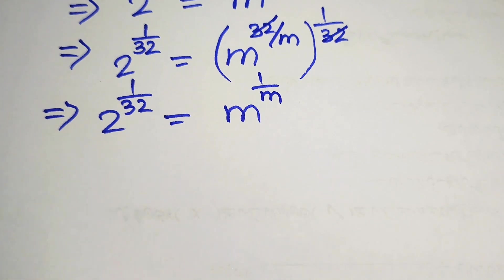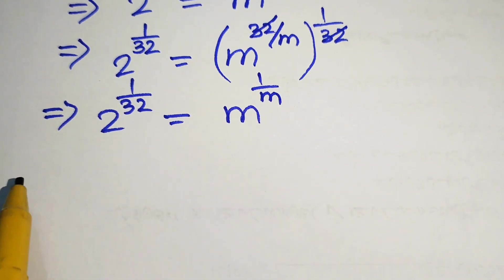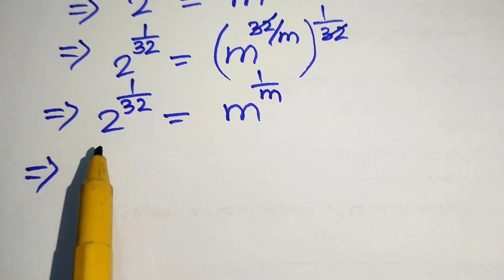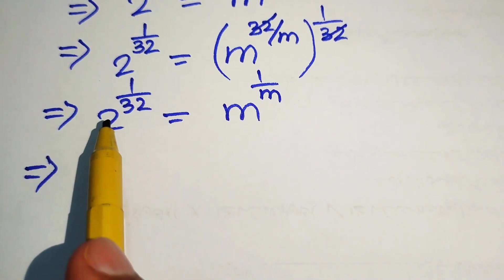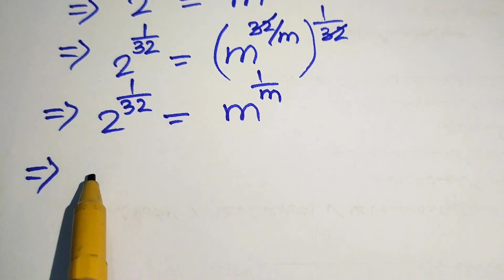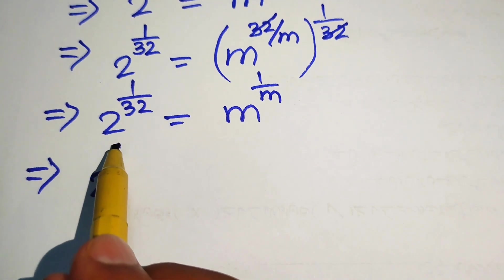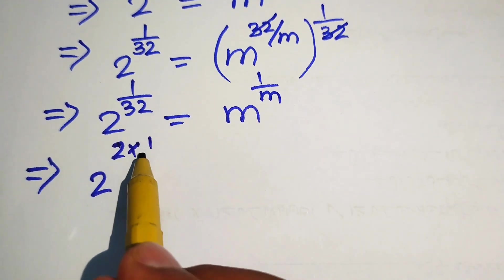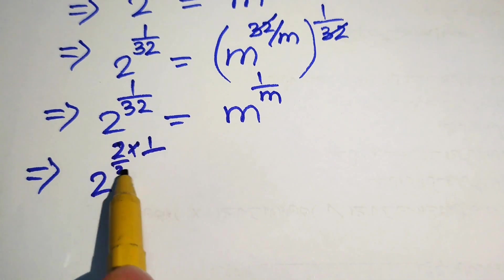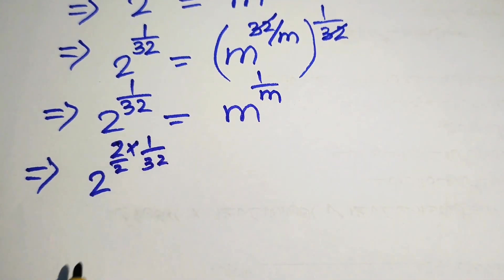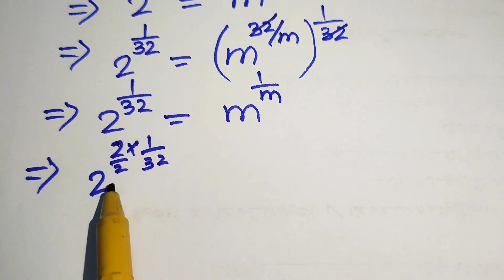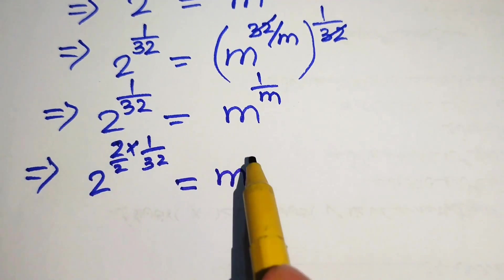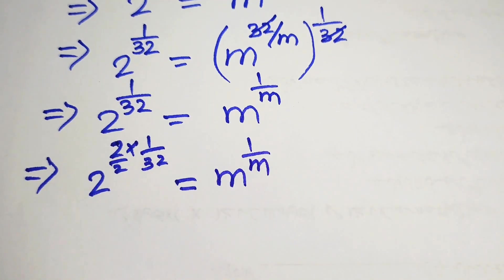To achieve this, we multiply and divide the exponent of the left hand side by 2. We get 2 multiplied by 1 over 2, times 2 multiplied by 32, and we write the right hand side as it is.